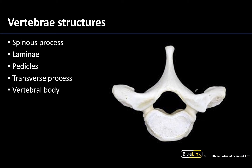We're looking at a thoracic vertebra here, but that doesn't matter because these structures can be found in the other ones as well. I always like to start with the body of the vertebra. It can differ in terms of shape and size, but it's always going to be the most anteriorly placed structure. We're looking at a superior view here, so the body will always be anteriorly placed, and then we will have the rest of the vertebra, which is referred to as the vertebral arch.